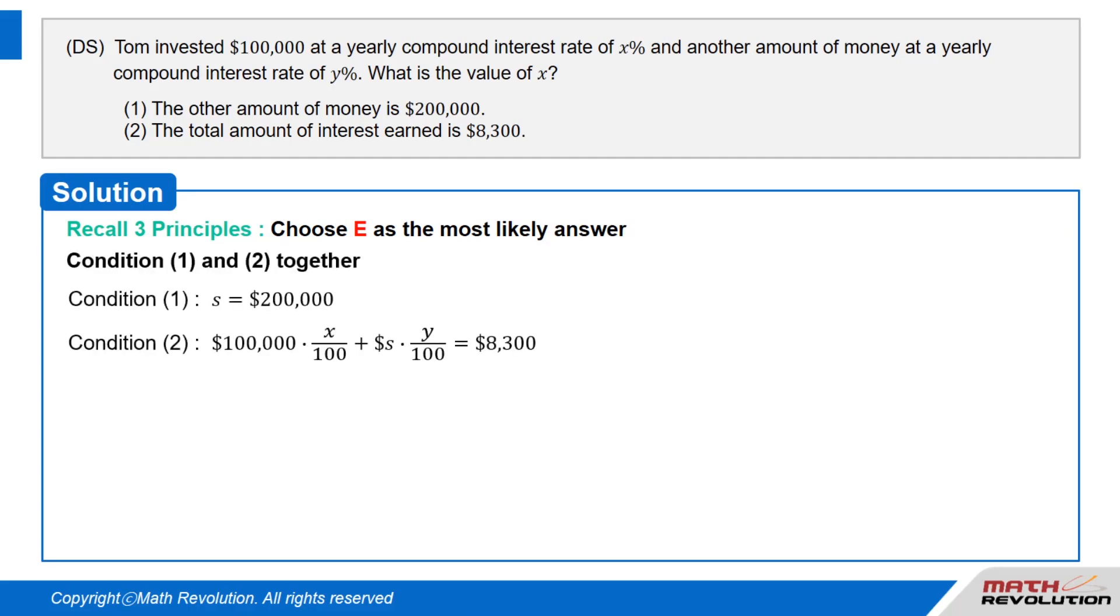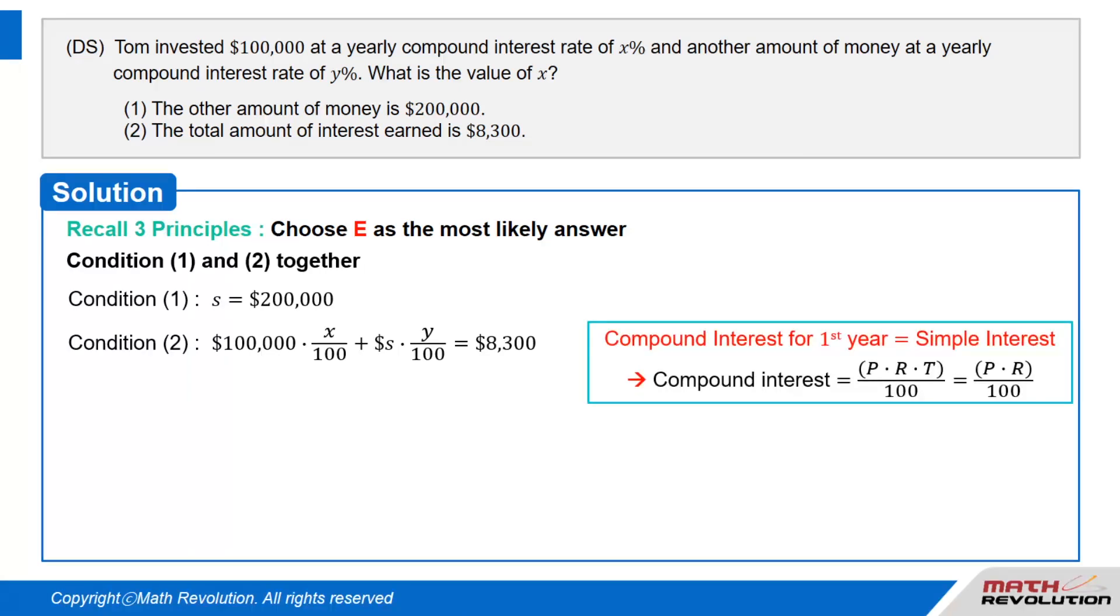Let's take a look at both conditions together. Condition 1 tells us that S equals $200,000. And condition 2 tells us that $100,000 times X over 100 plus S times Y over 100 equals $8,300. Note, compound interest for one year is same as simple interest, so it can be calculated as P times R times T over 100 equals P times R over 100 where P is principal, R is interest rate, and T is time taken.